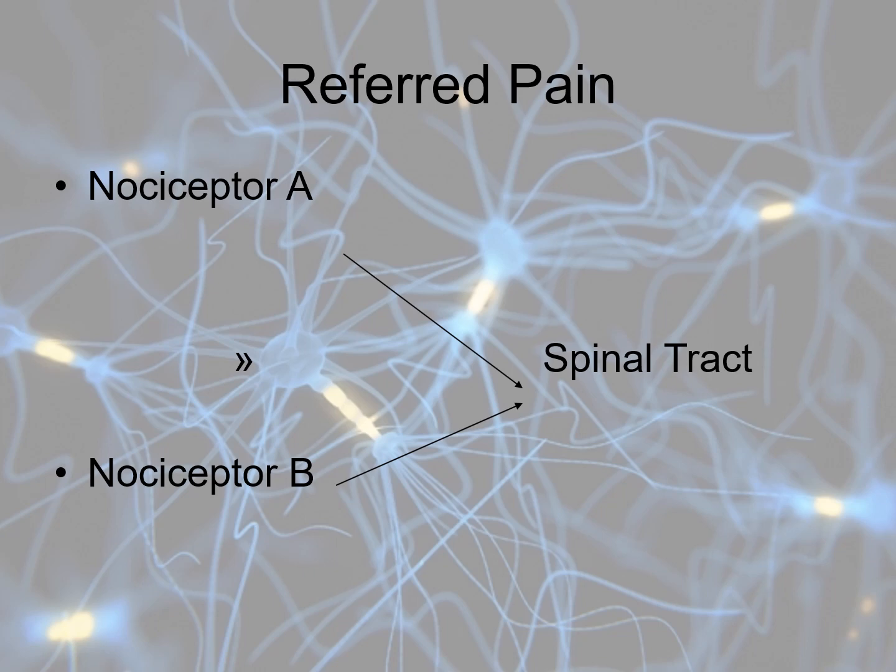Referred pain occurs when nociceptor A is stimulated, but when it reaches the spinal tract, the spinal cord perceives it as nociceptor B, or both A and B. For example, when you have ischemia to your heart, there is what's called six-dermatome pain, where all those nerves enter the spinal cord and you'll feel pain in your chest, shooting down your left arm, and shooting up into your jaw.